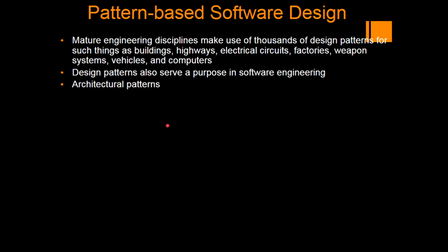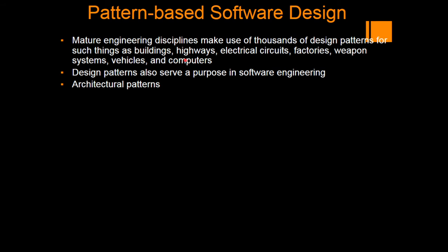There is also pattern-based software design. Patterns are templates on which the product can be built, and these patterns can also derive further patterns. Mature engineering disciplines make use of thousands of design patterns for things like buildings, highways, electrical circuits, factories, weapon systems, vehicles, and computers. In all engineering disciplines, patterns form the templates on which we build components. Similarly, in software engineering, design patterns play an important role. Architectural patterns define the overall structure of the software, indicate the relationships among subsystems and software components, and define the rules for specifying relationships among software elements.